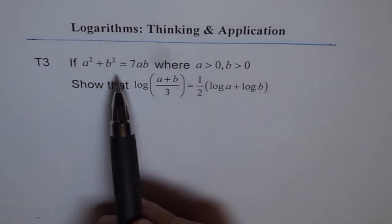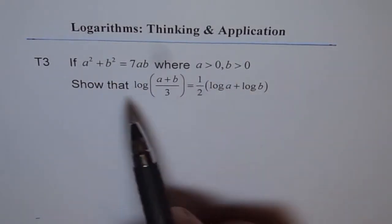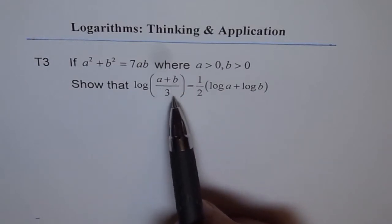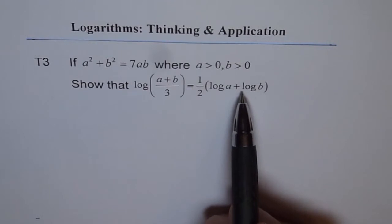If a square plus b square equals to 7ab, where a and b are positive, show that log of a plus b over 3 equals to half of log a plus log b.